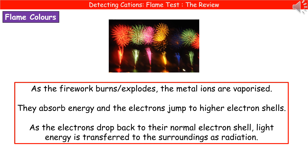One place you see lovely bright flashes of colour is fireworks night. As the firework burns or explodes, the metal ions contained within it are vaporised. As a result of that vaporising, they absorb energy and the electrons within their structure jump to higher electron shells. As those electrons drop back to their normal shell, they release energy as light energy, which is transferred to the surroundings as radiation.